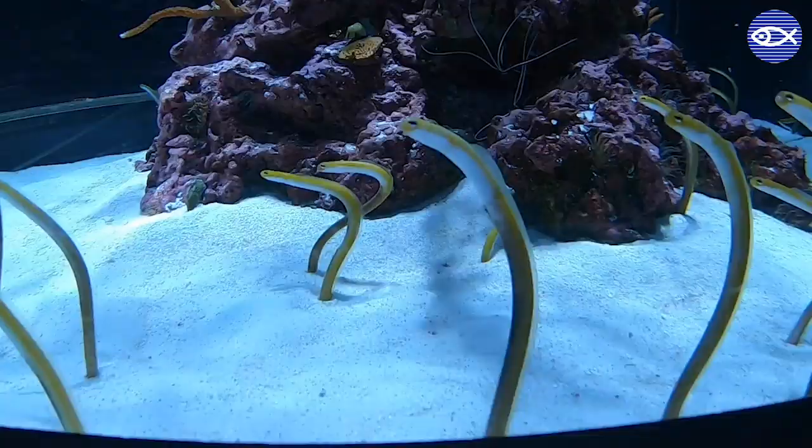So what do they eat? Garden eels like to eat zooplankton which are tiny animals that float around in the water. The eels use their large eyes to spot the food and then move their heads in the current to catch the zooplankton as it drifts by.